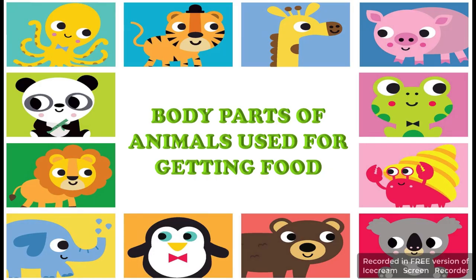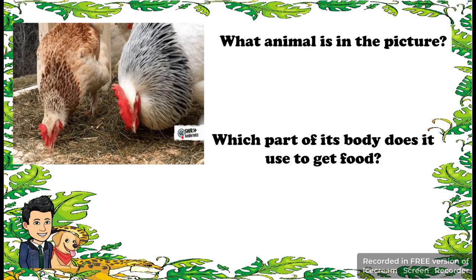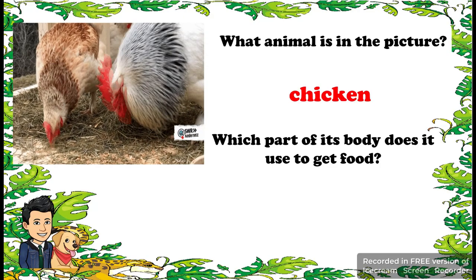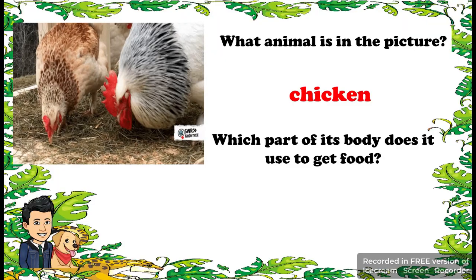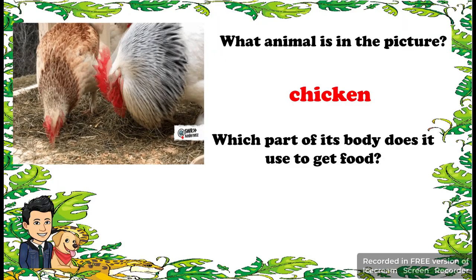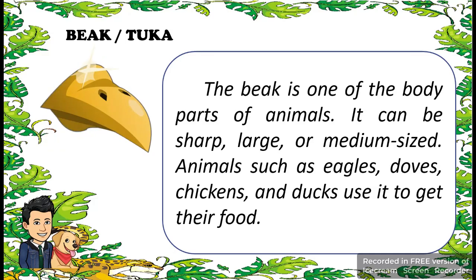Body parts of animals used for getting food. One animal is a chicken. Which part of its body does it use to get food? They use their beak. The beak is one of the body parts of animals. It can be sharp, large, or medium-sized. Animals such as an eagle, chicken, and ducks use their beak to get their food.